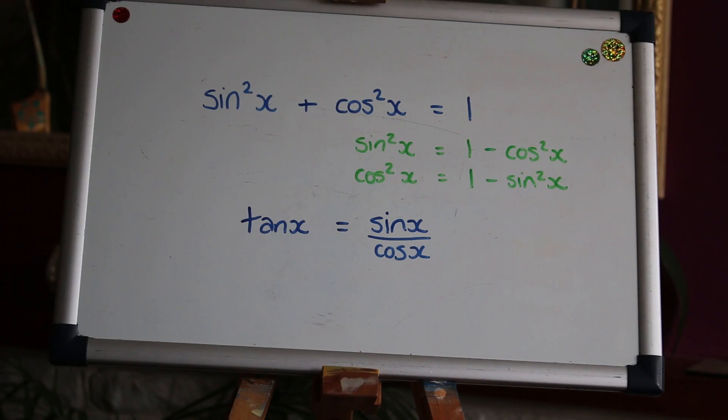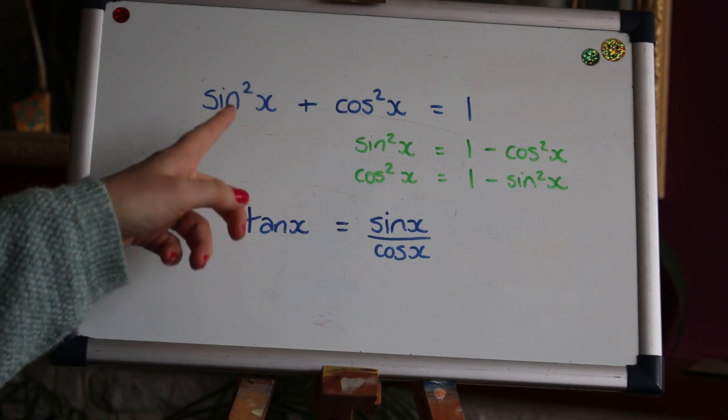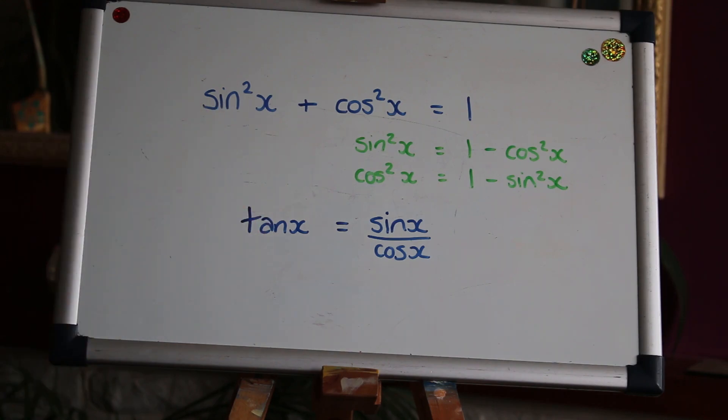So here I've written up the two identities that we're going to look at today in blue. First we've got sin squared x plus cos squared x equals one and it's really helpful to rearrange that to make sin squared or cos squared the subject, so I've done that in green underneath. And the second identity, tan is sin divided by cos.